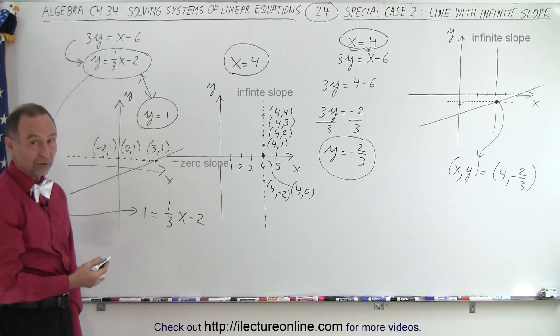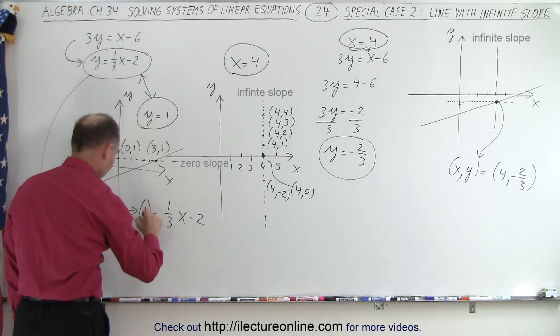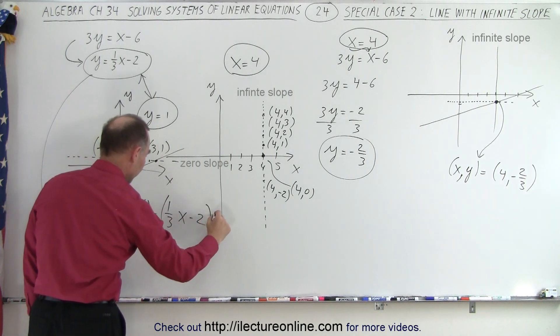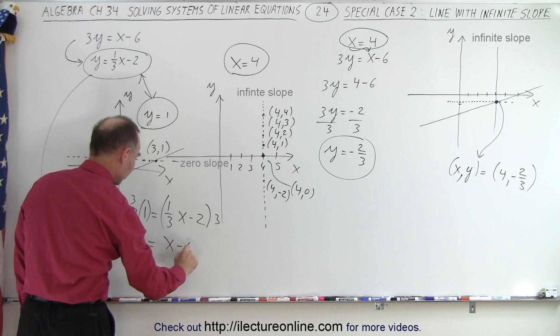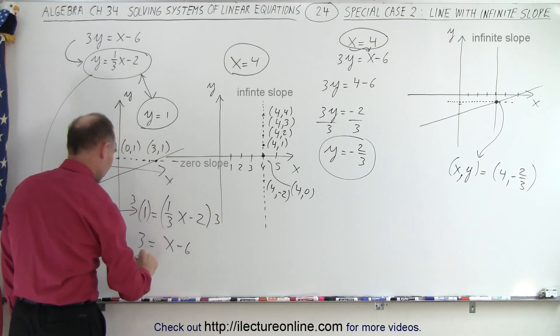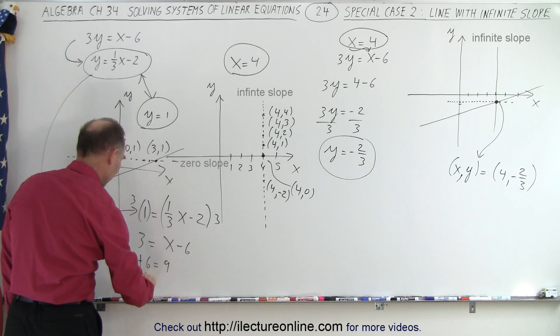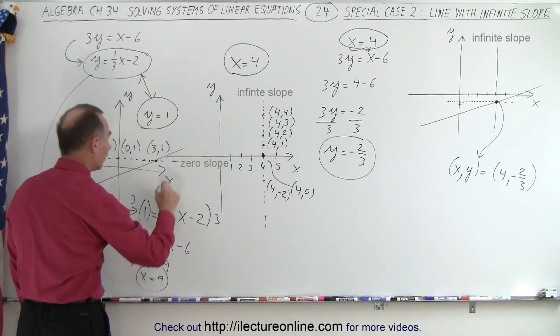And then you would multiply both sides by 3. So you multiply this one by 3 and multiply this one by 3. So you get 3 is equal to 1x minus 6. Move the negative 6 over. So you get 3 plus 6 is equal to 9. So x equals 9 would be the point right there.